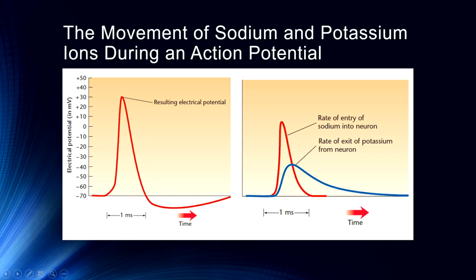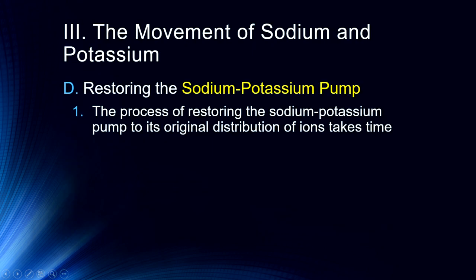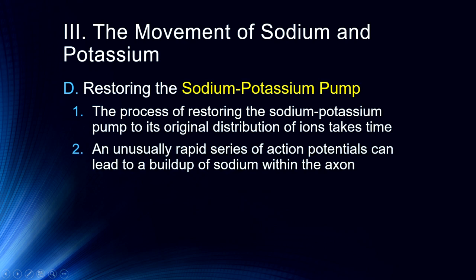During the relative refractory period the neuron can fire, but it requires a greater level of excitation. During this time frame we have sodium pouring in, then potassium ions exiting, producing the overshoot as we restore the sodium-potassium balance. The process of restoring the sodium-potassium pump to its original ion distribution takes time. An unusually rapid series of action potentials can cause a buildup of sodium within the axon, which can actually cause brain damage — over-excitation can cause a neuron to rupture. This is one mechanism by which some drugs are neurotoxic.